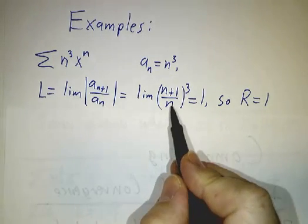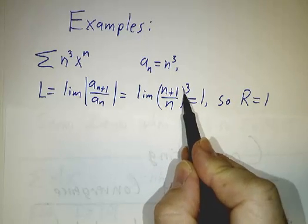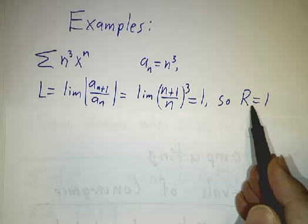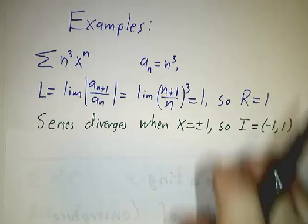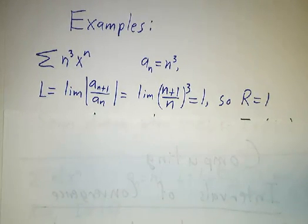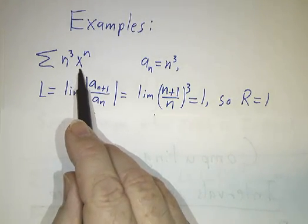It's the limit of (n+1)³ over n³. (n+1)/n goes to 1, so its cube goes to 1. Since L is 1, R is the reciprocal of 1, which is 1. So the series diverges when x is bigger than 1. It converges when x is less than 1. We have to check the cases where x is 1 or minus 1 by hand.